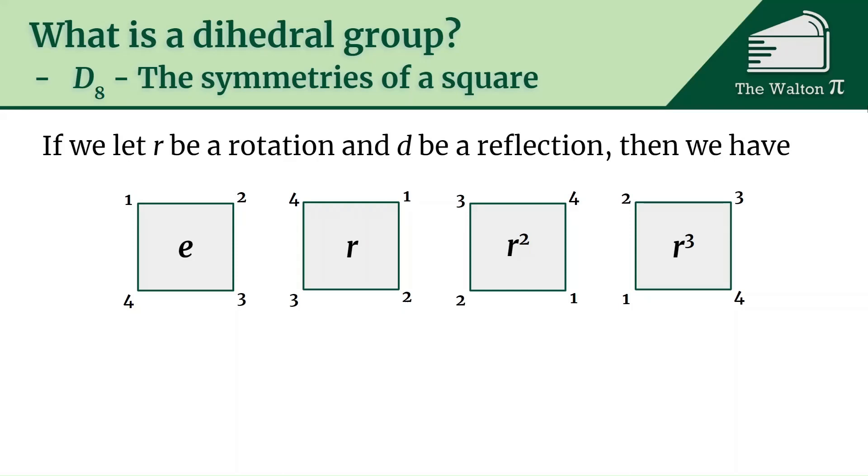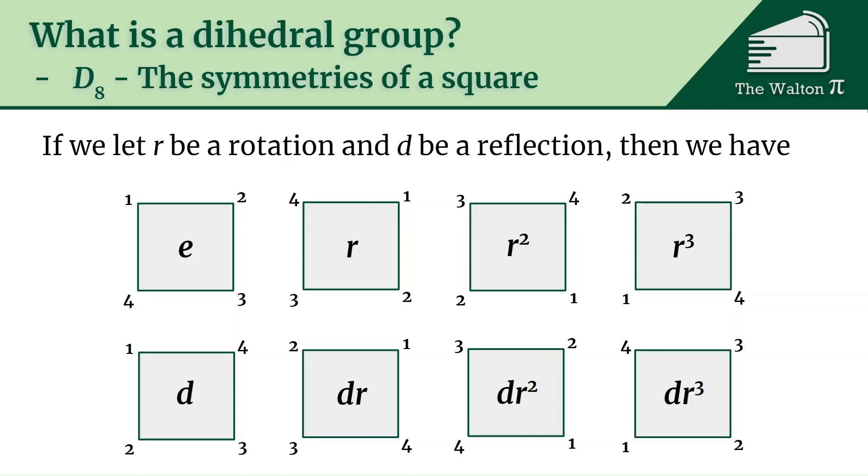But we could also have a reflection. For example, we could have d—we could reflect it first, and then we get one, four, three, two. But we could also reflect it and then rotate it. So that's where we get this dr. We could reflect it and then rotate it twice, or we could reflect it and rotate it three times. But if we reflect it and rotate it four times, we're back to where we started at d.